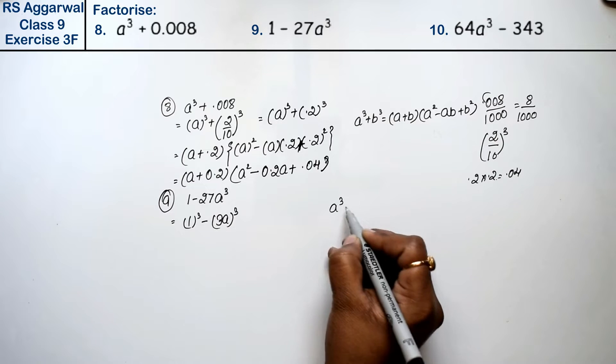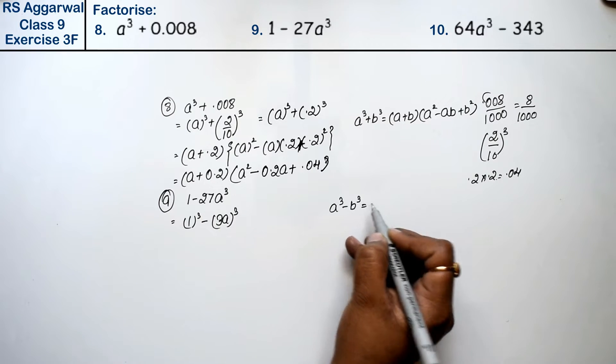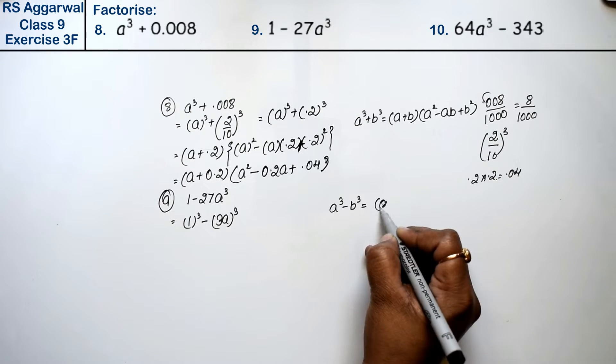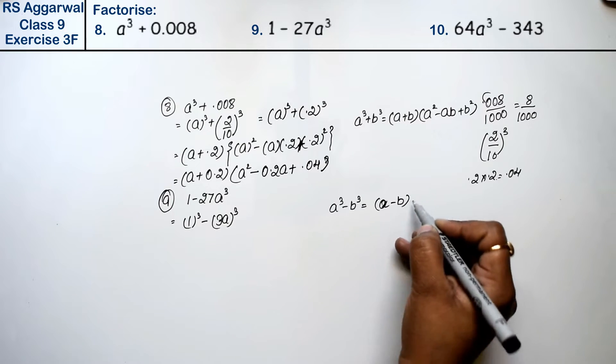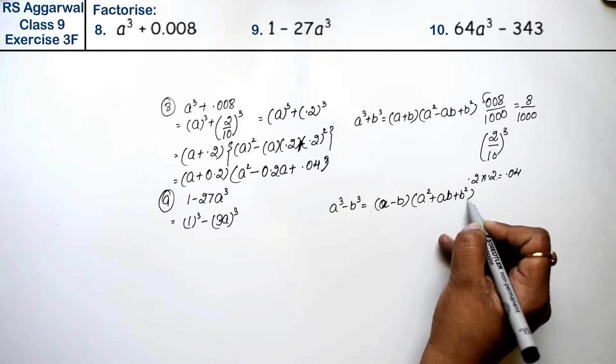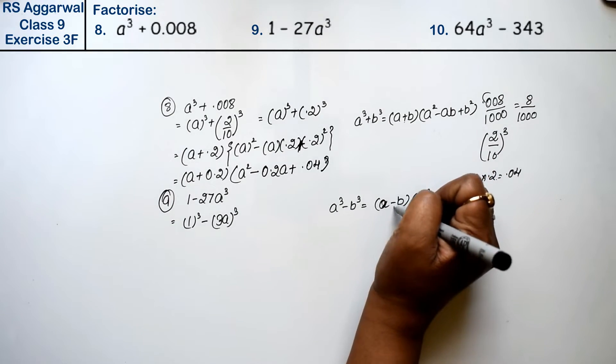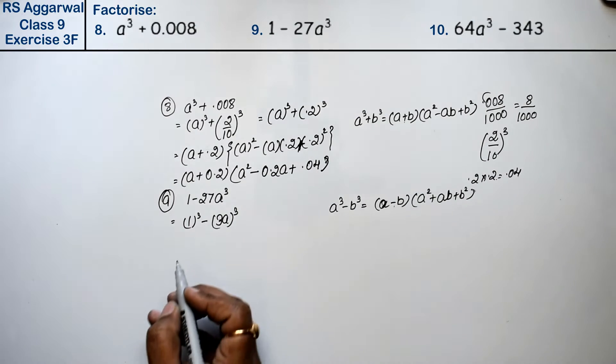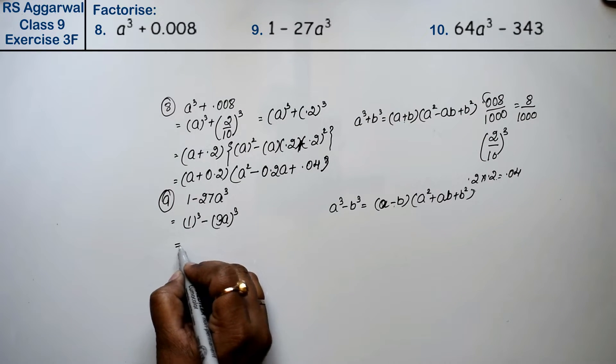Now see, the formula is a³ minus b³ equals (a minus b)(a² plus ab plus b²). Here is a plus, here is a minus.